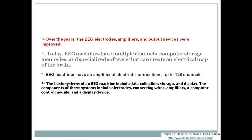Over the years, EEG electrodes, amplifiers, and output devices have been improved. Today's EEG machines have multiple channels, computer storage, and specialized software that can create an electrical map of the brain. Amplifiers can support up to 128 electrode connections, though routine EEG typically uses around 21 electrode channels. Modern amplifiers can have 32, 44, 64, or up to 128 channels, used for research and special cases.